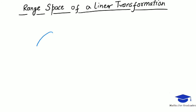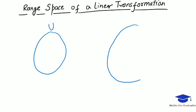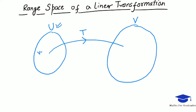Suppose we have a vector space U and another vector space V, and there is a linear transformation from U to V — I call this linear transformation T. Then with this vector space U containing vectors, and with the help of this mapping T, this mapping T maps all the vectors of U inside V.